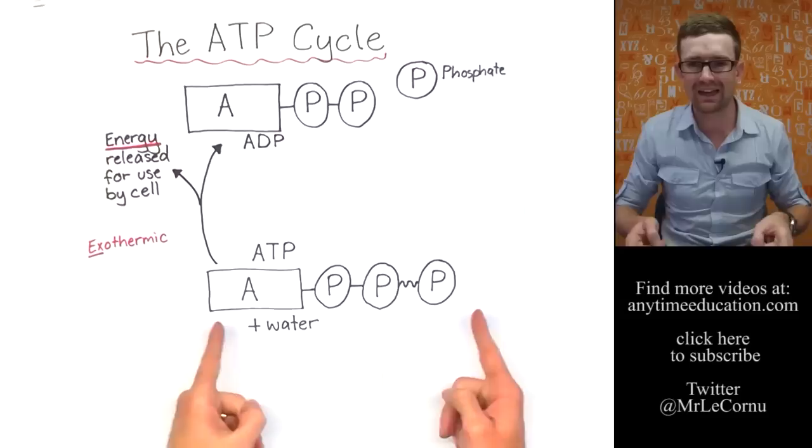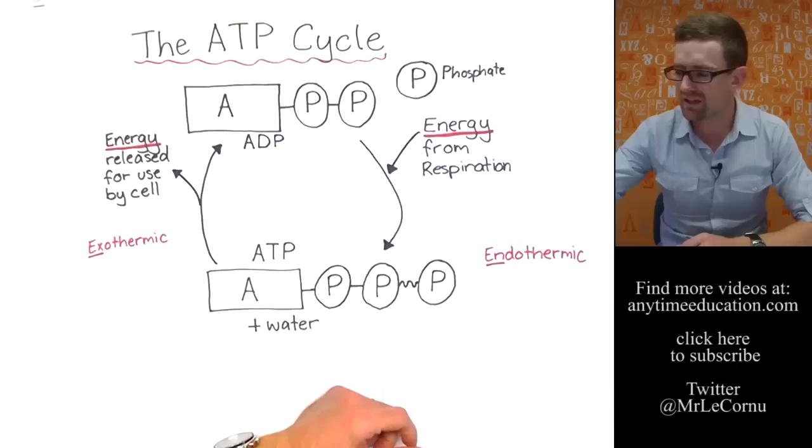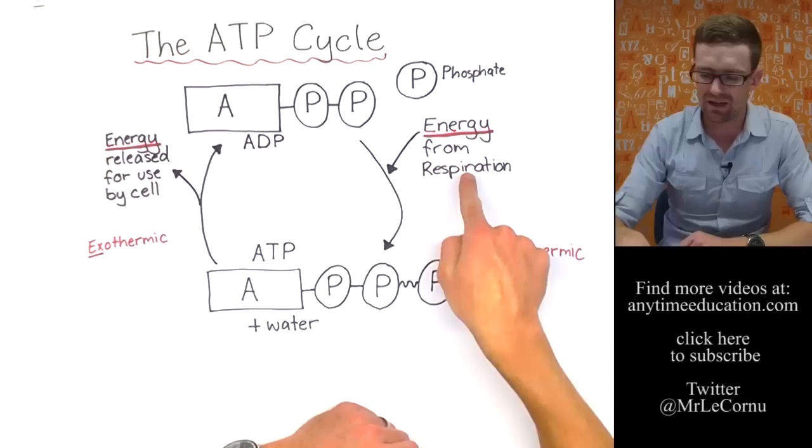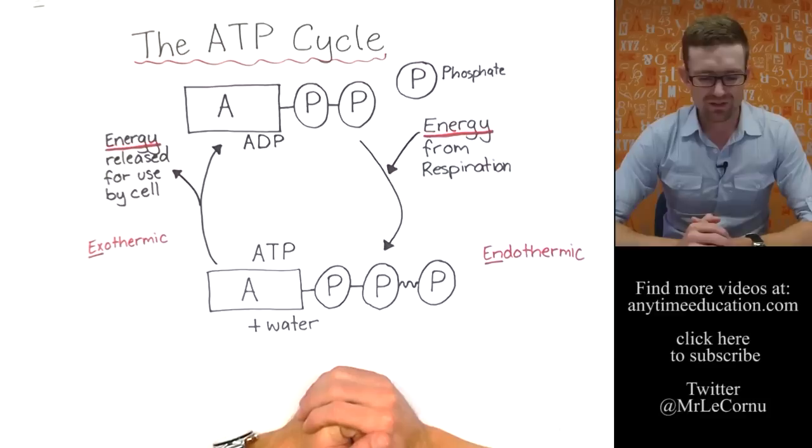adding the phosphate back on to make ATP again is an endothermic process, which means it requires energy. And that energy that is required to attach the phosphate back on and form ATP comes from cellular respiration, aerobic respiration or fermentation. Check those videos out if you haven't already.